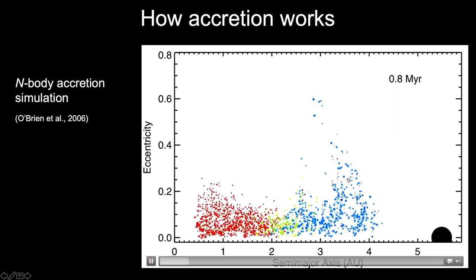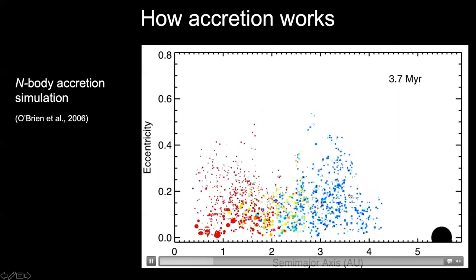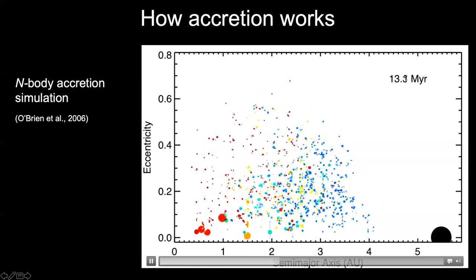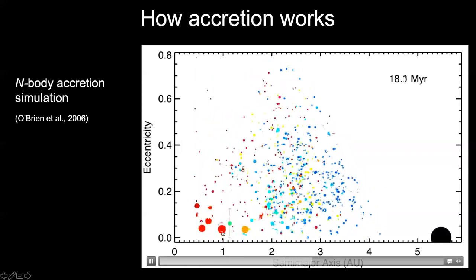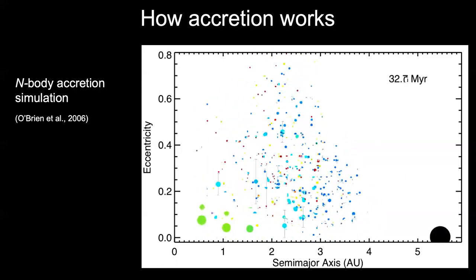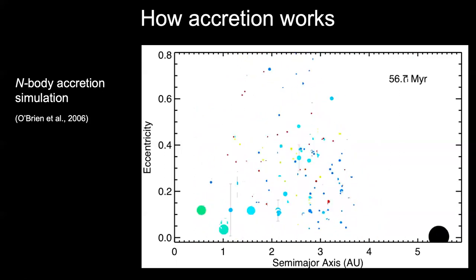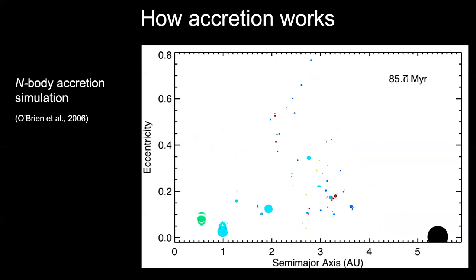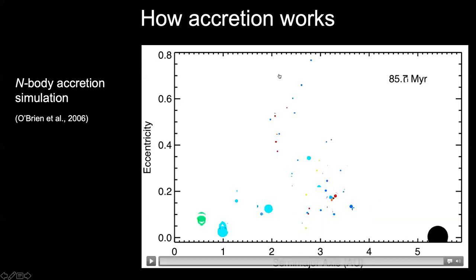Initially we get spikes in eccentricity caused by orbital resonances with Jupiter and Saturn. We start to form a small number of larger bodies with low eccentricity and a large number of smaller bodies with higher eccentricity. Keeping an eye on the planet at 1 AU — our Earth analog — it starts out red and gradually becomes cooler colors, getting rather blue. The Earth is initially forming from material near 1 AU and over time accretes more material from the outer, more oxidized and volatile-rich parts of the disk. After 85 million years, we've formed something like three or four terrestrial planets.